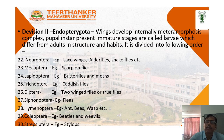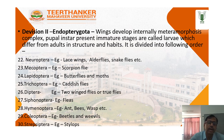The second division is Endopterygota: wings developed internally, metamorphosis is complex, and immature stages are called larvae, which differ from adults in structure and habit. It is divided into the following orders: Neuroptera, Mecoptera, Lepidoptera, Psocoptera, Diptera, Siphonaptera, Hymenoptera, Coleoptera, and Strepsiptera.